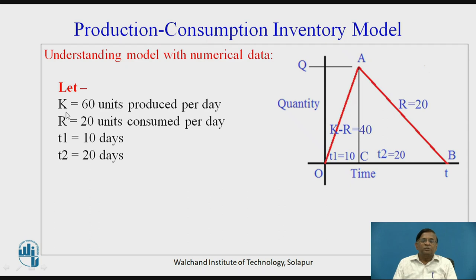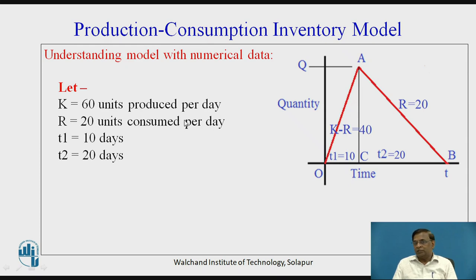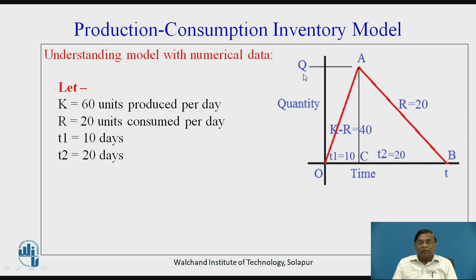Let us assume capital K, the production rate, as 60 units per day — we are producing 60 units in one day. The consumption rate, indicated by symbol R, let us assume as 20 units per day. Remember, as discussed in the earlier video, K must be greater than R. The rate of production has to be more than the rate of consumption; only then will we be able to reach capital Q, the holding quantity, to point A.